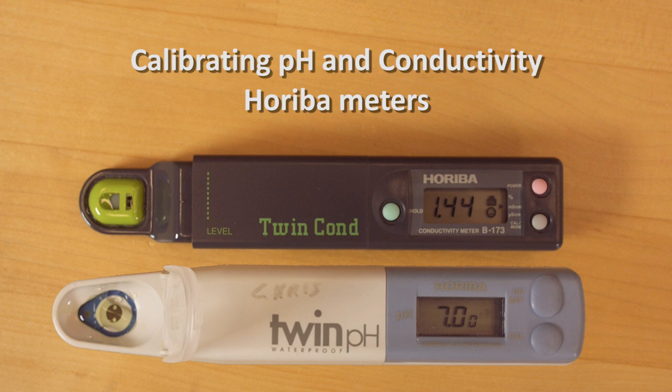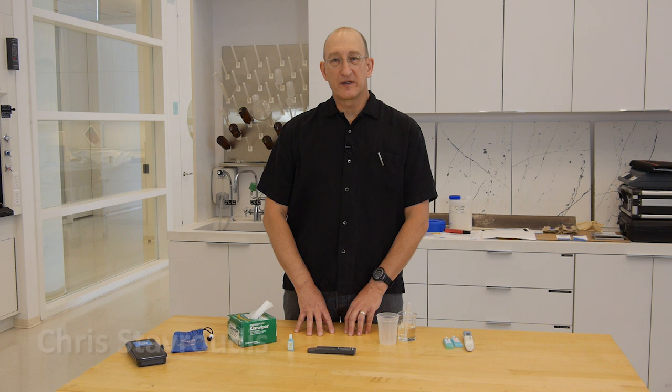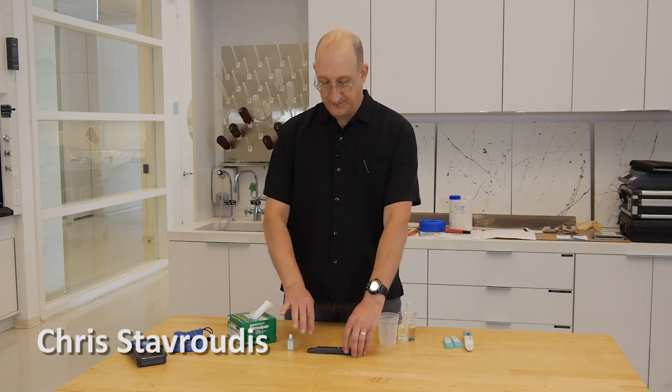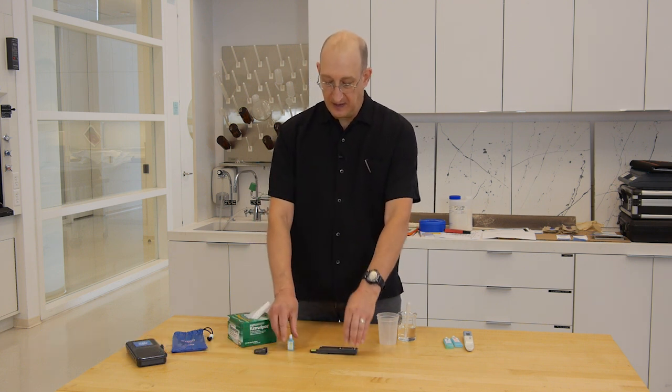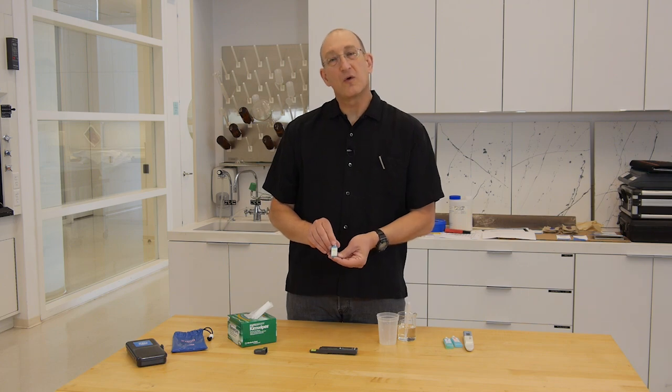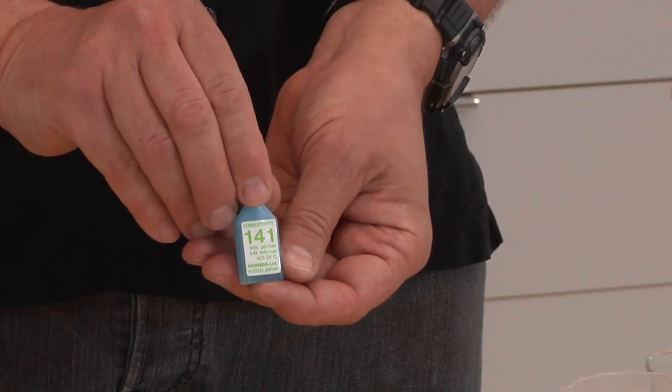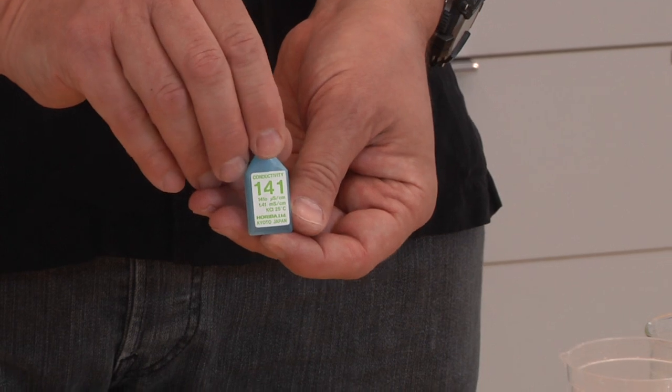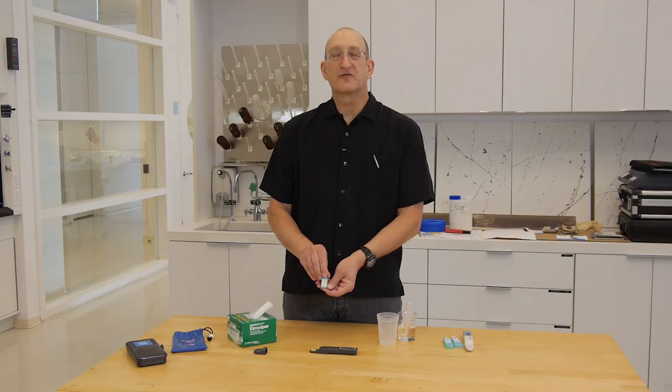To calibrate the Horiba conductivity meter, we start with turning the meter on, removing the protective cap, and we'll use a 141 calibration solution, which is 1.41 millisiemens per centimeter, or 1,410 microsiemens per centimeter.